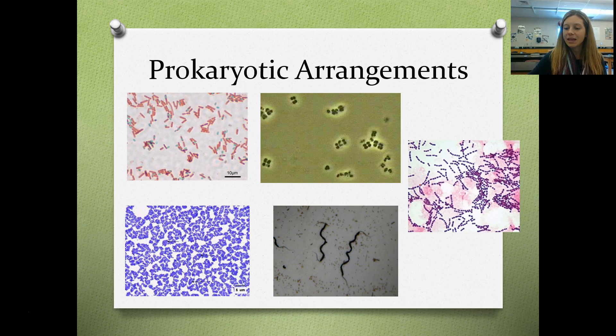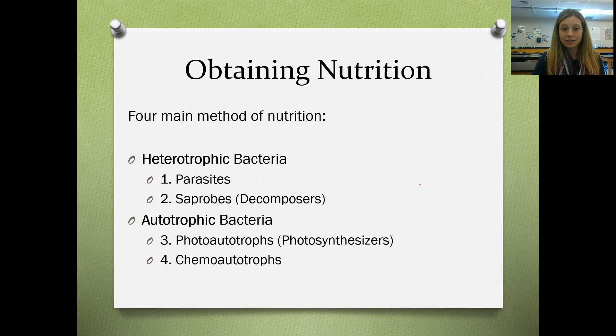Bacteria obtain nutrition in two ways — they can be heterotrophic or autotrophic. Heterotrophic bacteria have to consume other organisms to get their nutrition, so they are either parasites or decomposers, also called saprobes. Autotrophic bacteria make their own food and can do that in one of two ways: photoautotrophic or chemoautotrophic.